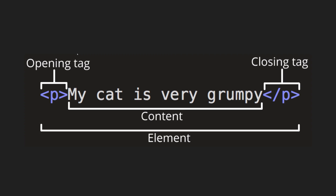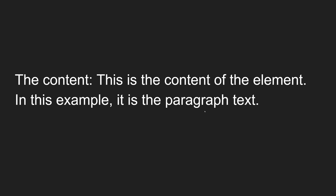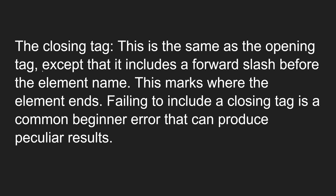The last one is the closing tag. The opening tag and closing tag look somewhat similar. The main difference between them is nothing but a forward slash. If you add a forward slash inside the angle bracket before the element name — the p element — we call it a closing tag. The closing tag is the same as the opening tag except that it includes a forward slash before the element name. This marks where the element ends.